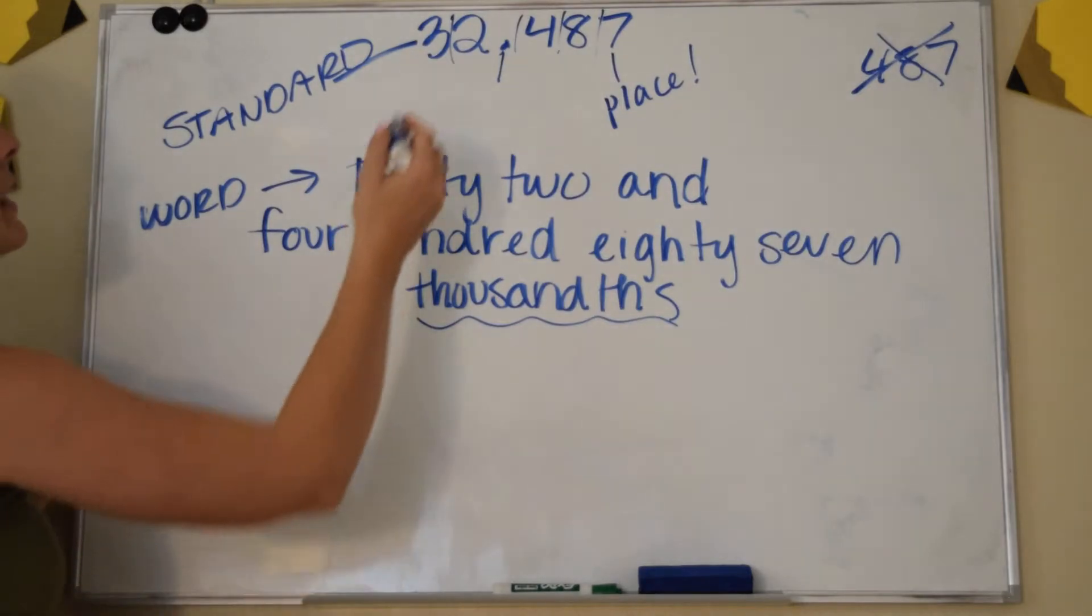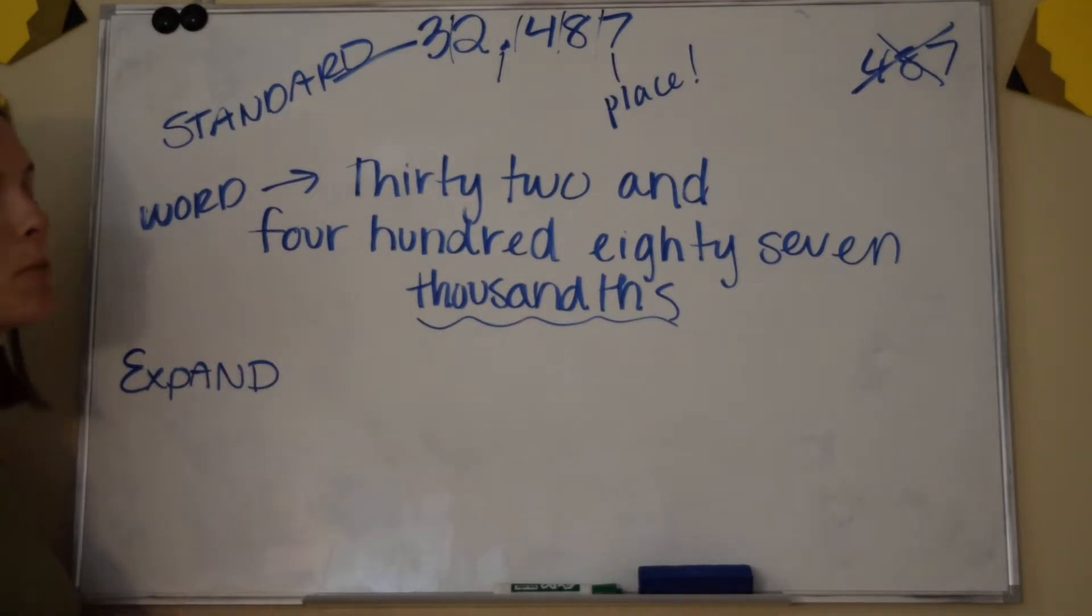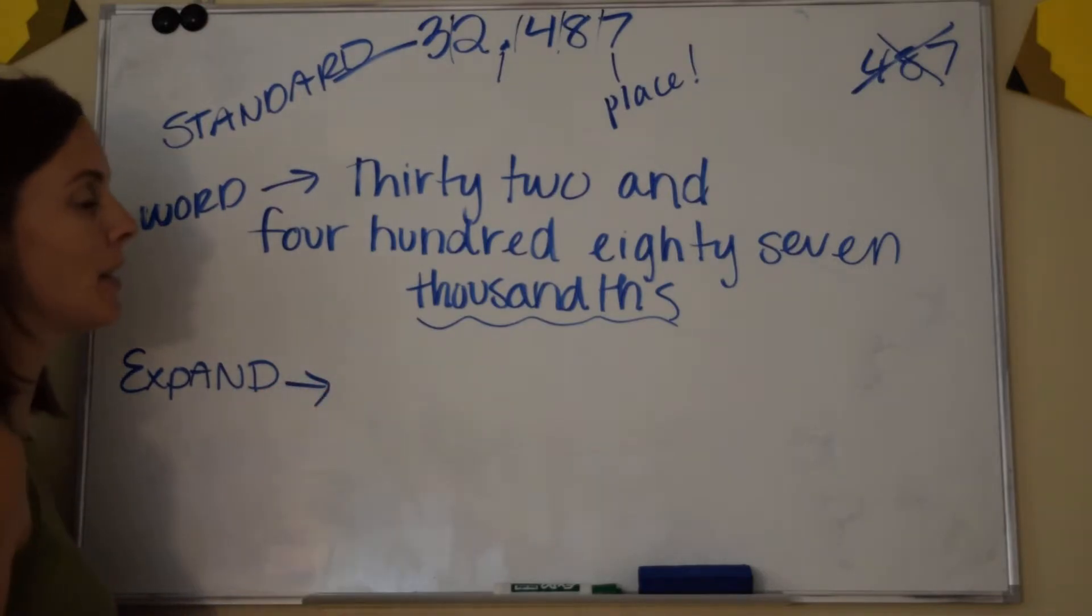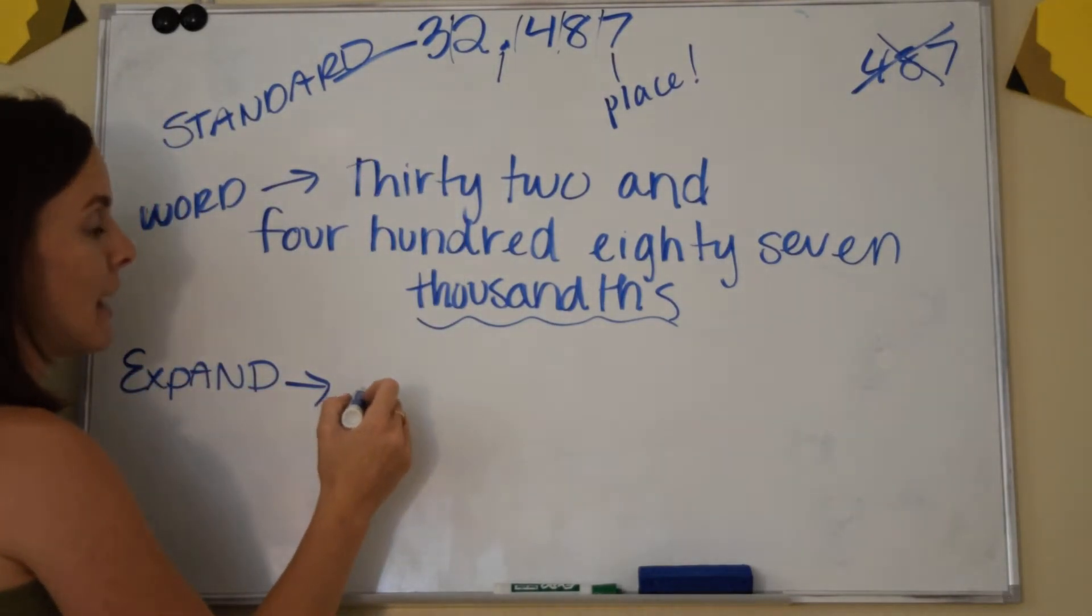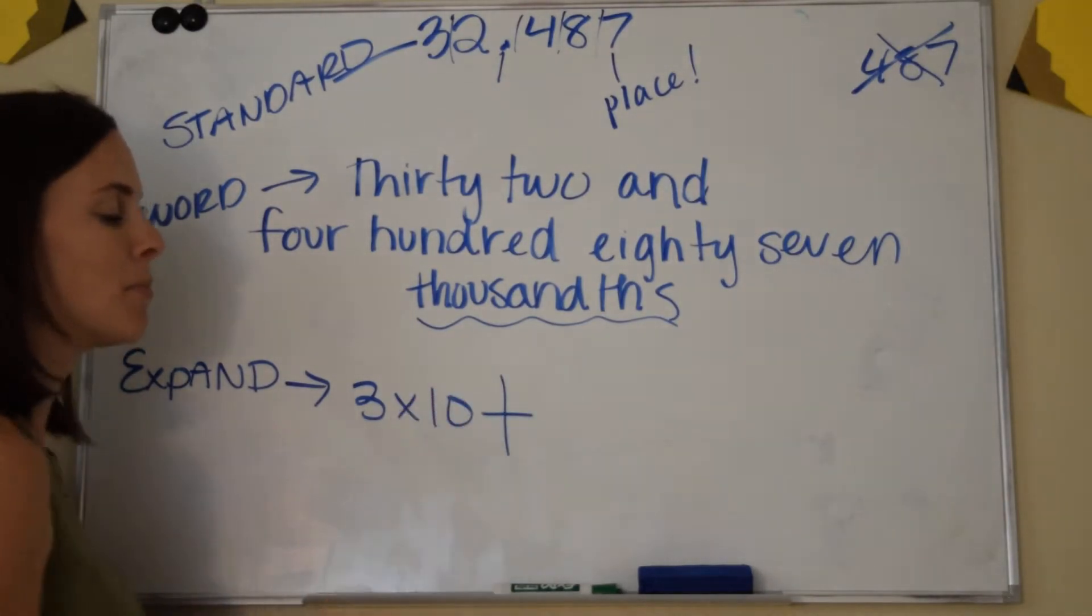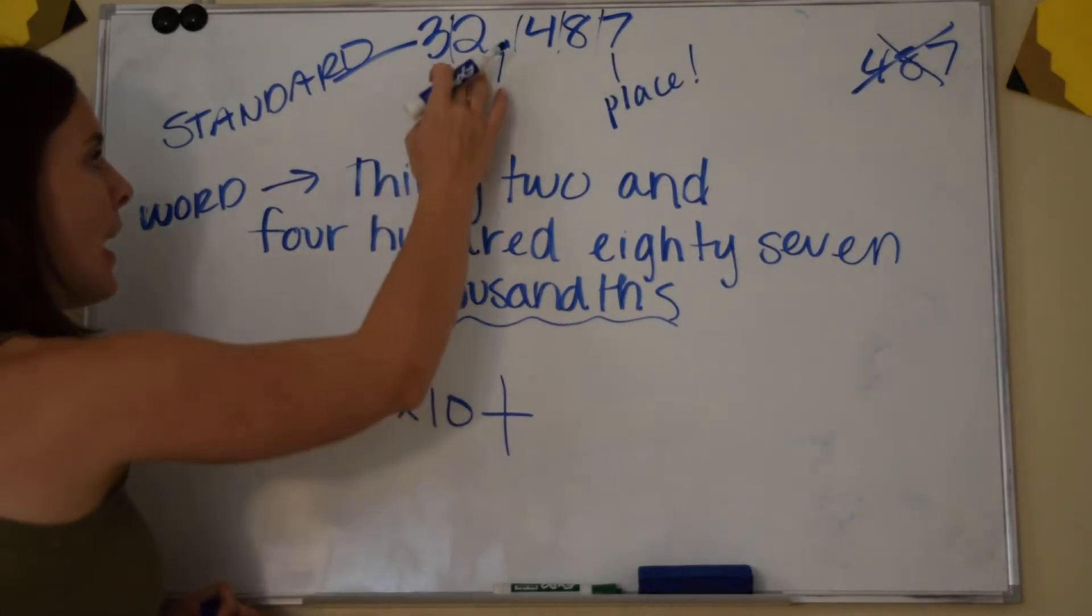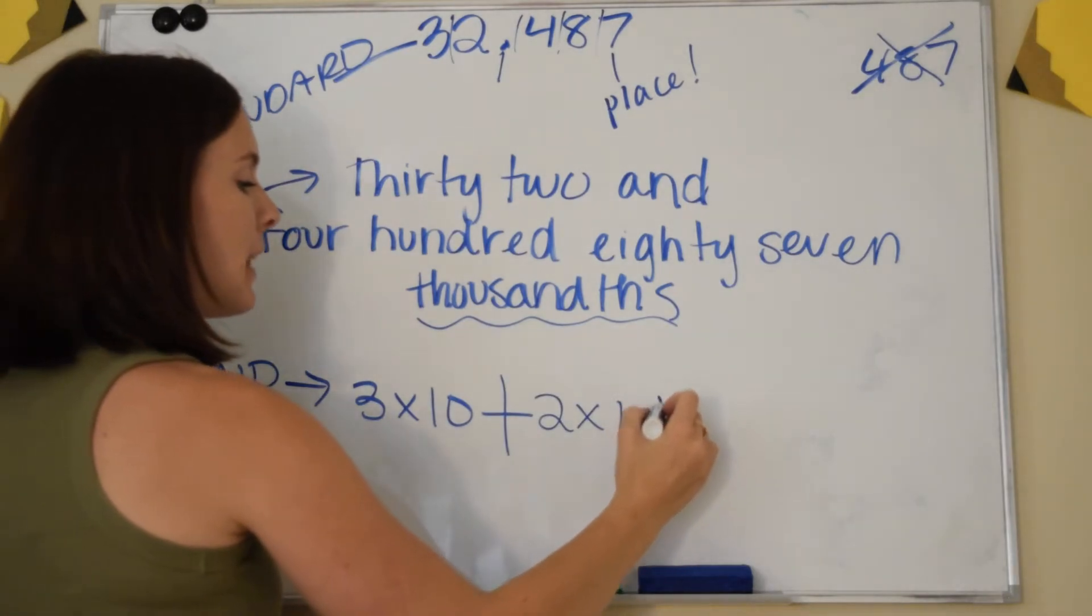So how do I take this and expand it? It gets a little bit different when we work with the numbers to the right of the decimal. But as far as the numbers in front of the decimal to the left, it's very much the same if you watch my other place value lesson. So the first digit is a three and it's sitting in the tens place. So it would be 3 × 10 plus. I like to write the plus really big because it helps me remember I'm going to the next digit. I have a two and I multiply it times 1 because it's in the ones place.